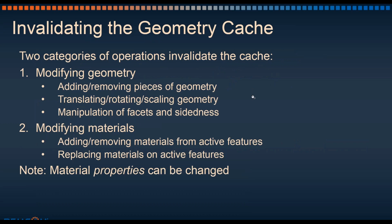There are some methods that will invalidate the geometry cache that will require it to be rebuilt at the beginning of a new simulation. One of the main ways to invalidate the geometry cache is by modifying the geometry. So adding or removing new pieces of geometry, modifying any of the existing pieces of geometry through translating, moving, rotating, scaling, deleting any of the faces, changing the sidedness of any of the pieces of geometry. They will impact results, and because of that the geometry cache will need to be rebuilt.